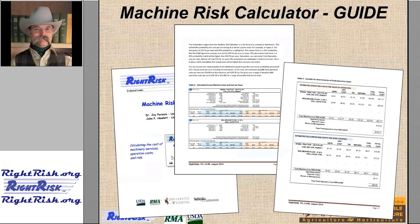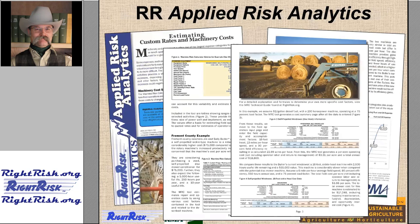The guide that comes with the downloaded software includes a walkthrough example using a moldboard plow, covering entries and probability analysis. A separate handout provides another example using a self-propelled windrower for hay harvest, including the probability analysis. These two examples allow you to sit down with the software, enter numbers, and verify you're getting the same results — practical starting points for learning the tool.